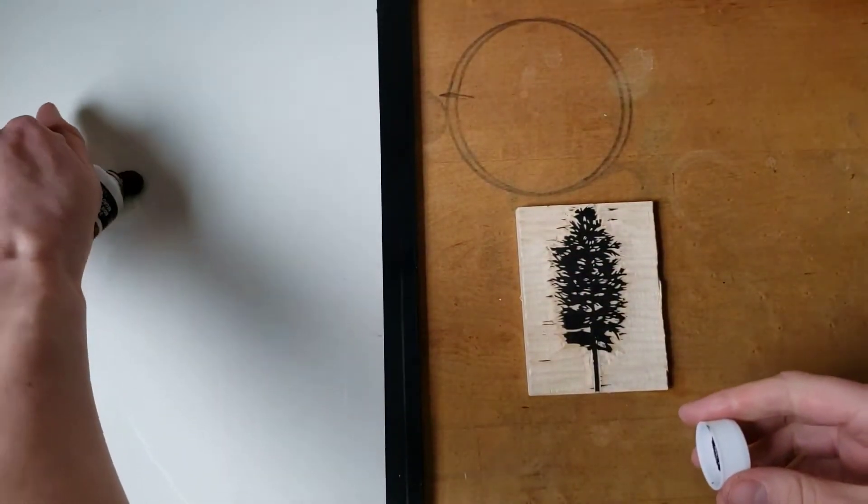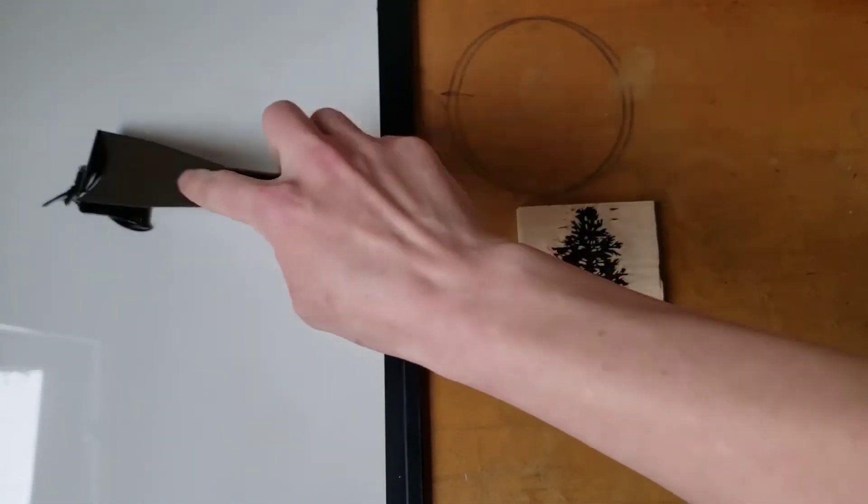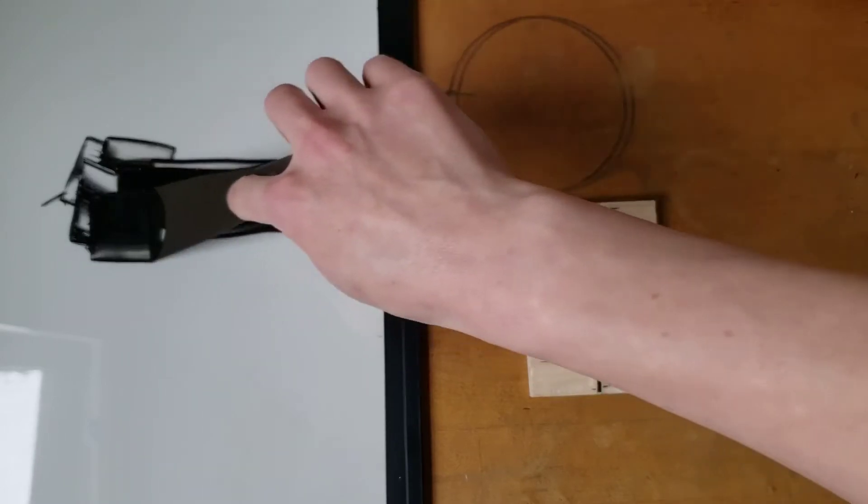Lay out a small amount of ink on the slab and work it with a knife to homogenize it and warm it up. You'll notice that wood blocks need a little more ink than linoleum because of how absorbent the untreated block is.